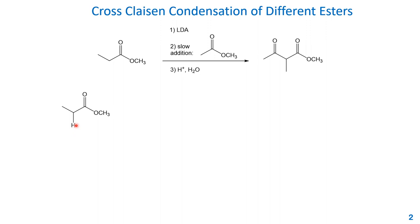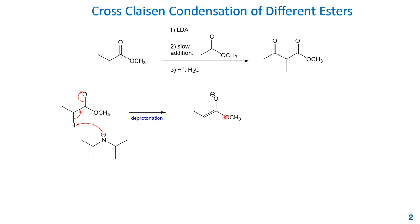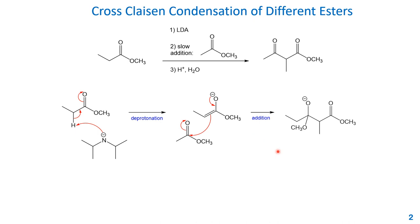In the first step, the alpha proton of this ester is deprotonated by the base. LDA is lithium diisopropyl amide, and the real base is the diisopropyl amide, which is a strong base. Deprotonation occurs and pushes the sigma electron to form the pi bond, then pushes the pi bond to the oxygen to form the enolate. This enolate reacts with the other ester added slowly. The lone pair of the oxygen pushes back, breaks the pi bond, the electrons attack the carbonyl carbon, and push the pi electron to oxygen, giving you the alkoxide intermediate. This then pushes back to kick off the methoxide as the leaving group.